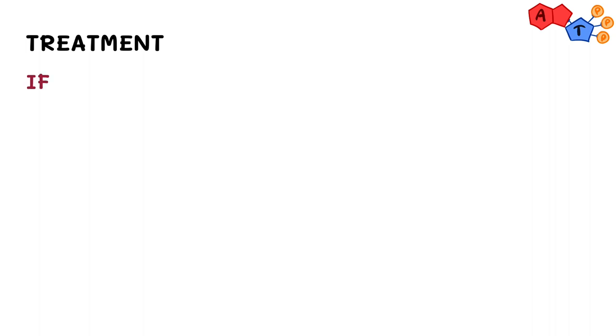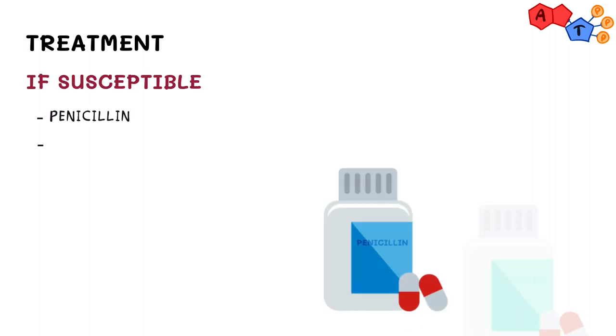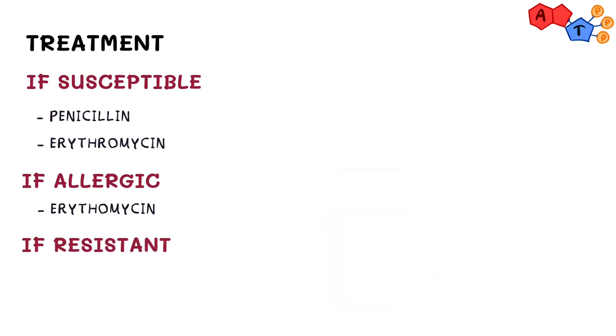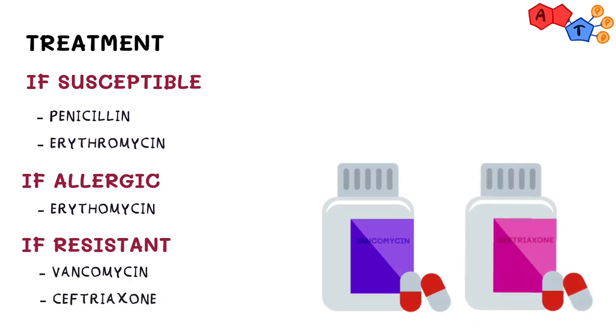Usually, pneumococci are susceptible to penicillin and erythromycin. In patients allergic to penicillin, erythromycin can be used. However, in cases where significant resistance to penicillin is present, vancomycin or ceftriaxone will be the drugs of choice.